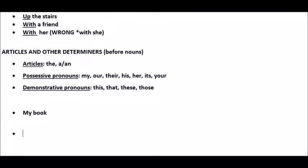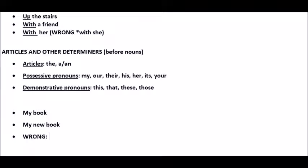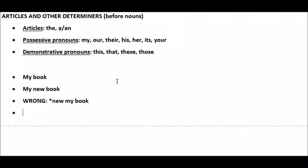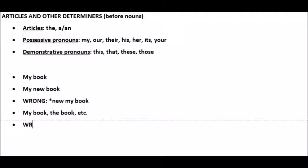For example, "my book" and "my new book" — we can put them in front of the adjective in front of the noun, but what we cannot do is put the adjective in front of the determiner. A little quick test there. Also, we cannot use two determiners in the same noun phrase. We can say "my book," "the book," and so on, but we cannot say "the my book" or "my this book."